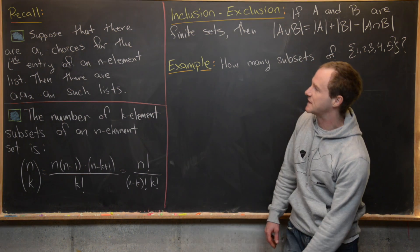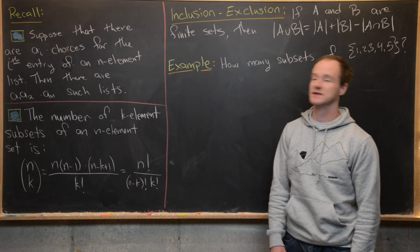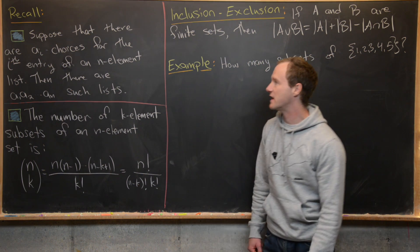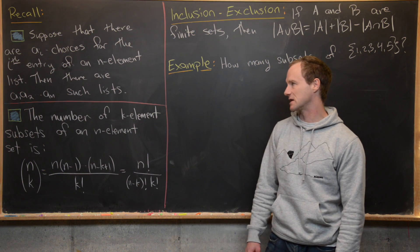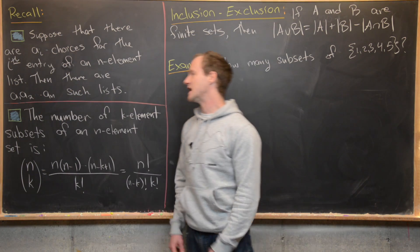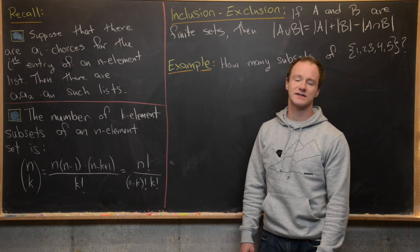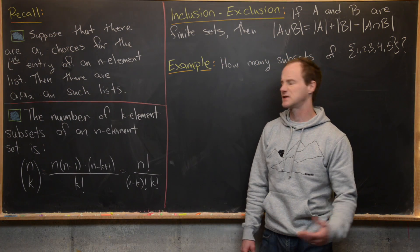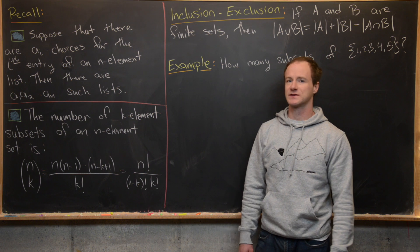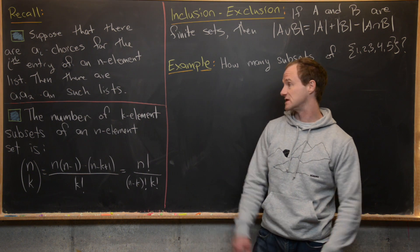If there are a_i choices for the i-th entry of an n-element list, then there are a_1 times a_2 all the way up to a_n such lists. We did a bunch of examples like that in the last video in this series.